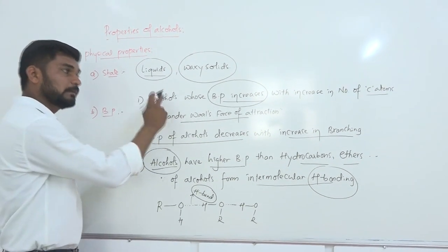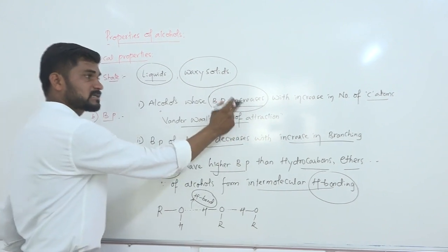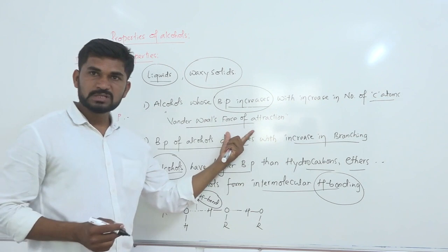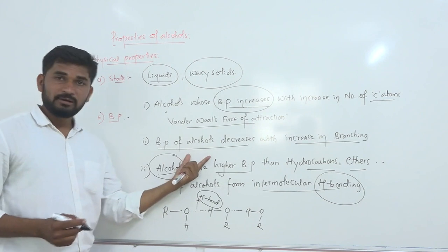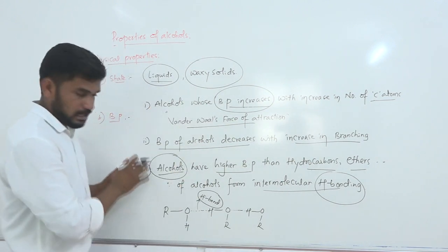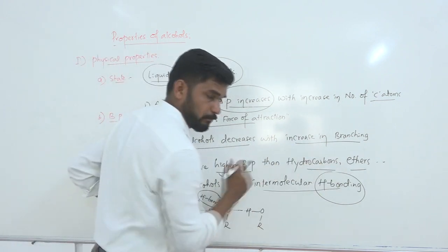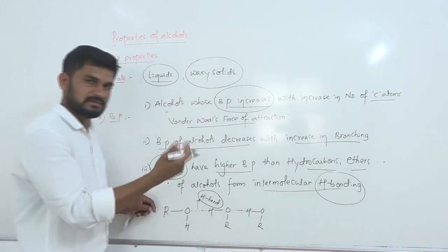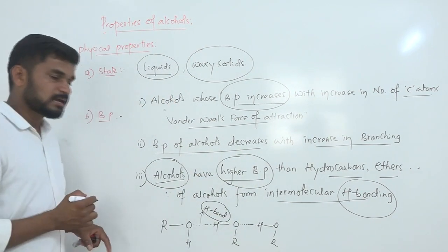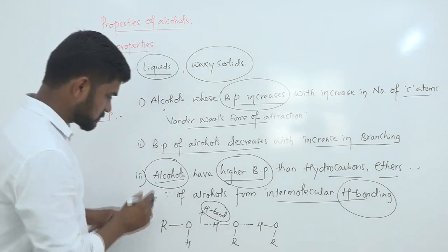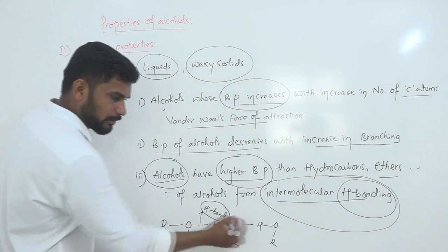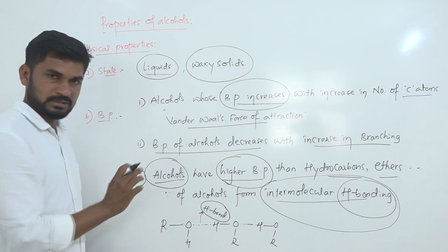To summarize the boiling point discussion: boiling point increases with increase in number of carbon atoms because van der Waals' forces of attraction increase. Boiling point decreases with increase in branching. And when compared with hydrocarbons and ethers, alcohols have higher boiling points because they are capable of forming intermolecular hydrogen bonding, which increases molecular mass and thus boiling point.